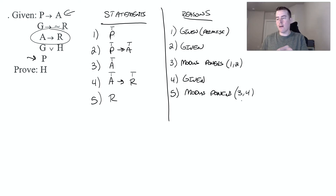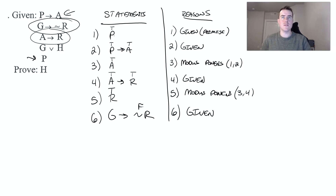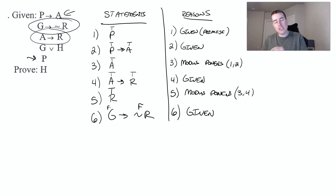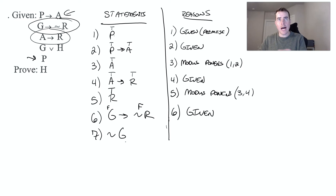Now that we have R, let's look for something else that has R. I see line six says G implies not R — that was given. Since R is true, not R is false. A conditional statement is only true if both parts are true, or if the hypothesis is false. Since not R is false, G must be false, which means not G is true. We call this modus tollens — R and not R, G and not G are opposites. We got that from lines five and six.